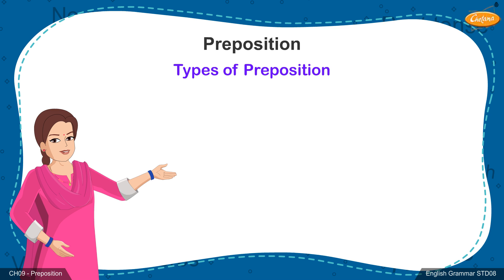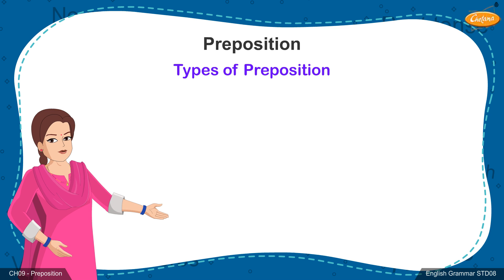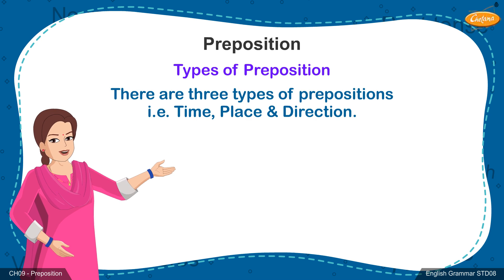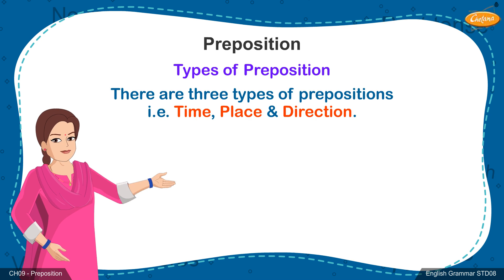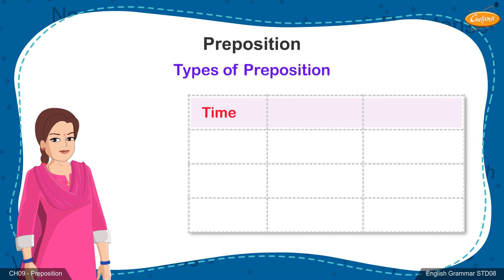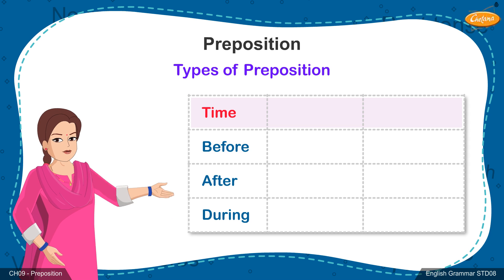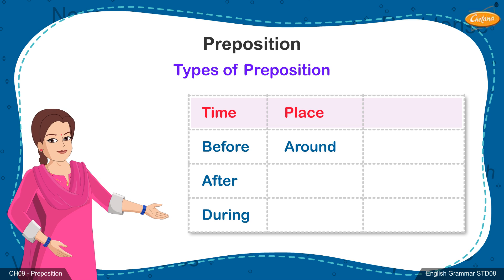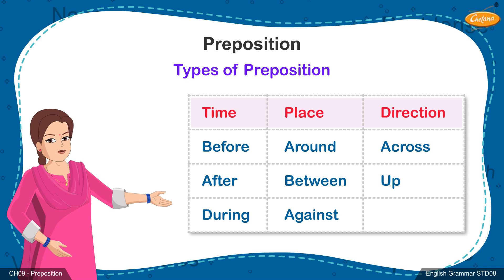Types of prepositions: Broadly speaking, there are three types of prepositions — time, place, and direction. Time: before, after, during. Place: around, between, against. Direction: across, up, down.